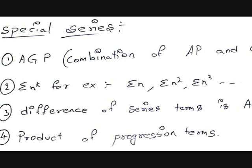You can find the nth term and any terms easily. But the sum of n terms of an AGP is somewhat difficult. The second special series involves formulas for the sum of first n natural numbers, squares of first n natural numbers, and cubes of first n natural numbers. Those are also series that come under the category of special series — we will discuss those in the next video.